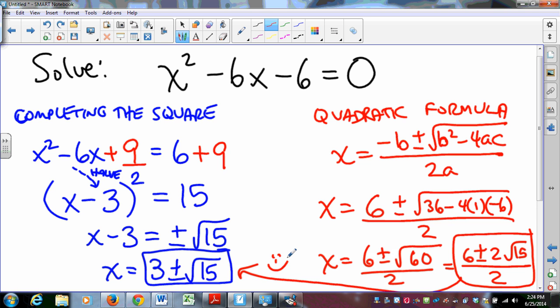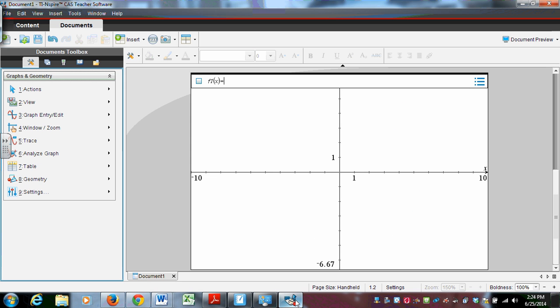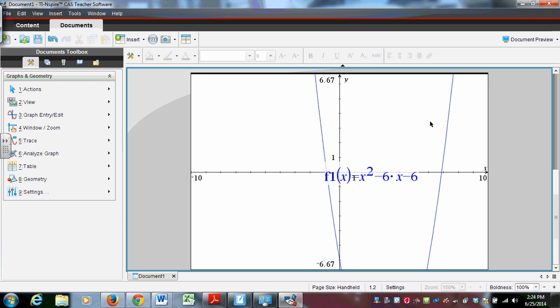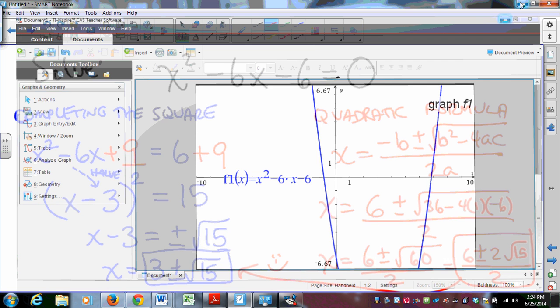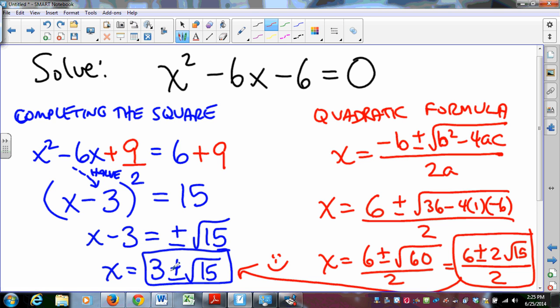Now, mind you, we could come at this from a graphical standpoint. If we come at this from a graphical standpoint, we graph x² - 6x - 6. And when we graph that parabola, we figure out where this is by finding a zero and where this is by finding a zero. And it turns out that this is at 6.87-ish and this is at -0.873-ish. And those numbers happen to be 3 + √15 and 3 - √15, approximately.